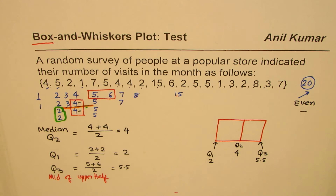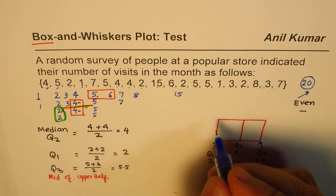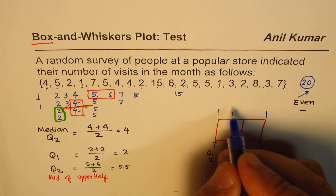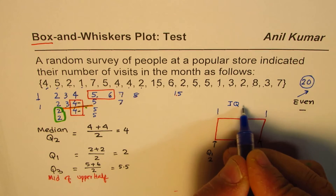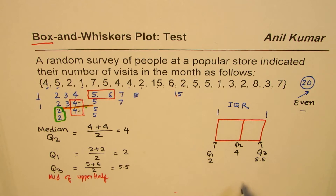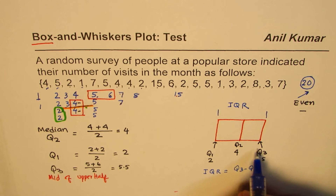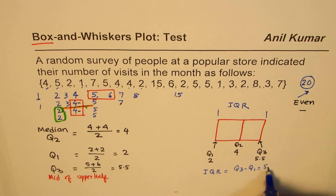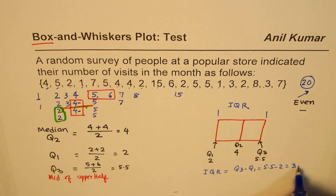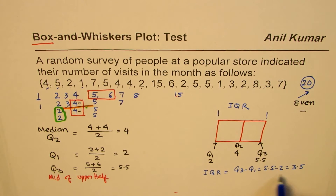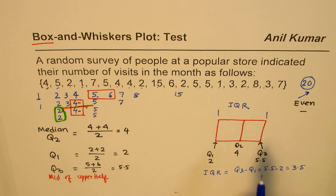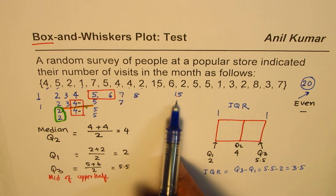Next we need to find the lower and upper whisker endpoints. To do this, we calculate the interquartile range (IQR): IQR = Q3 − Q1 = 5.5 − 2 = 3.5. We know 1 is the lowest and 15 is the highest value, but we need to check for outliers first.